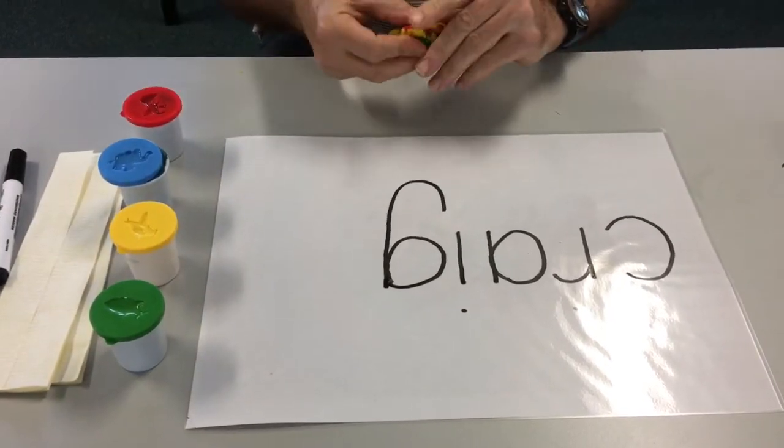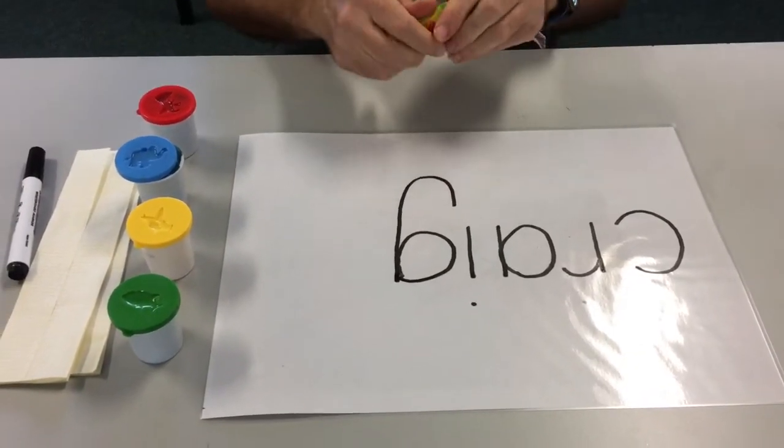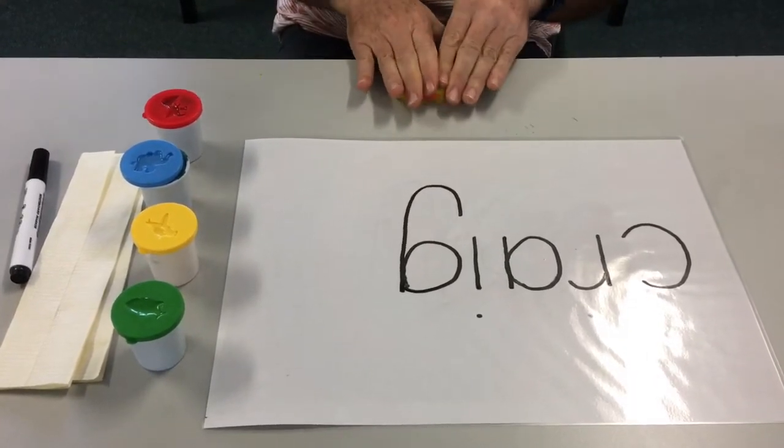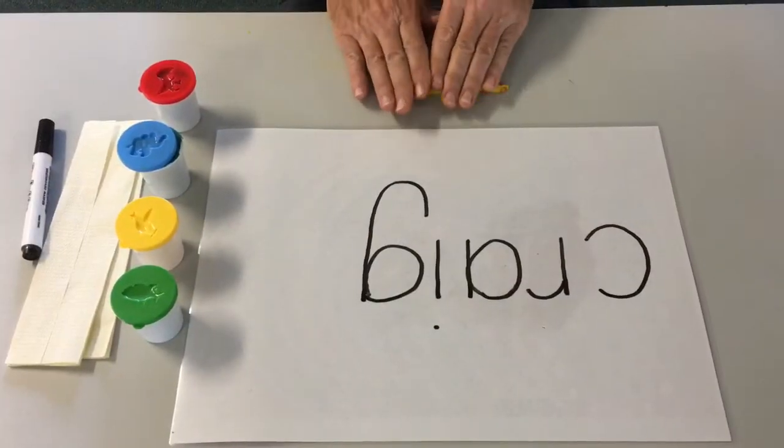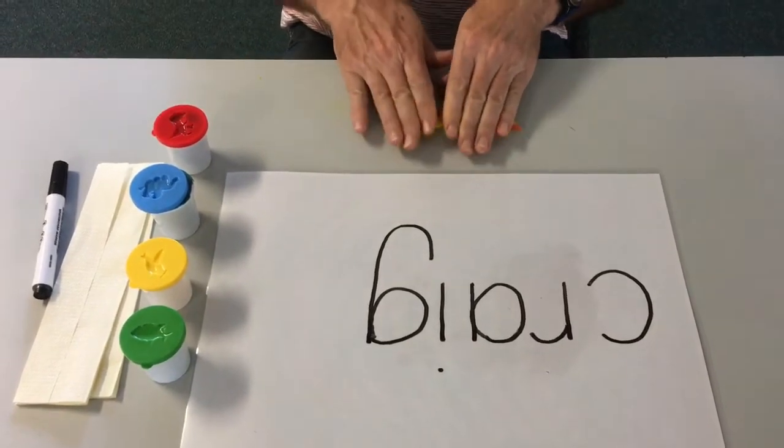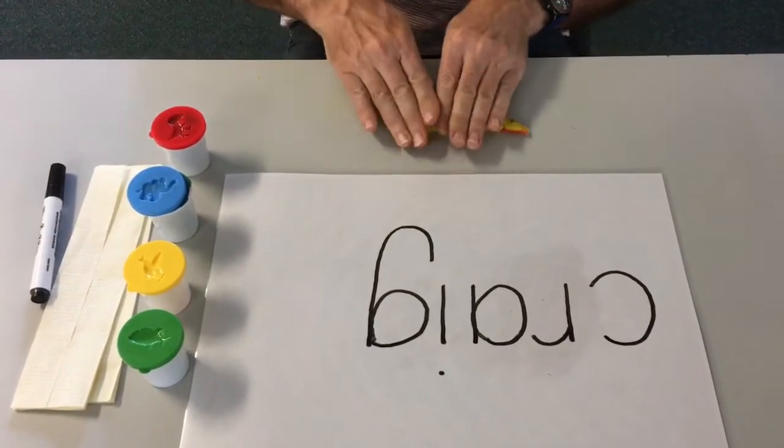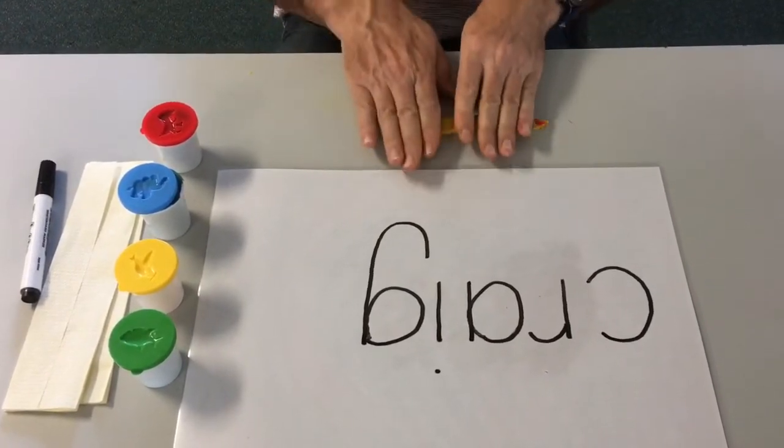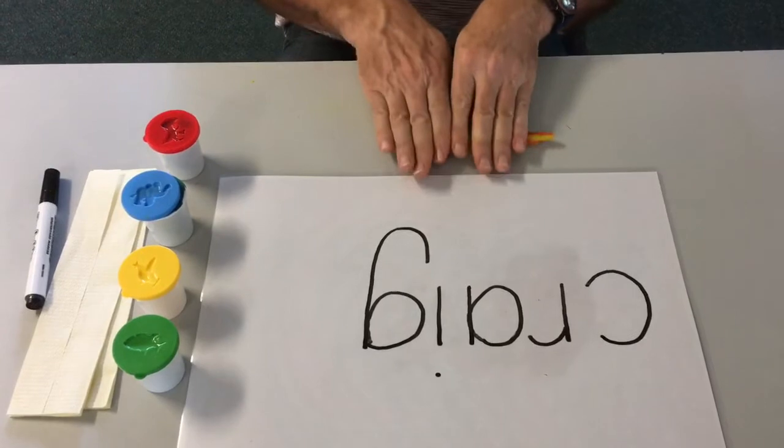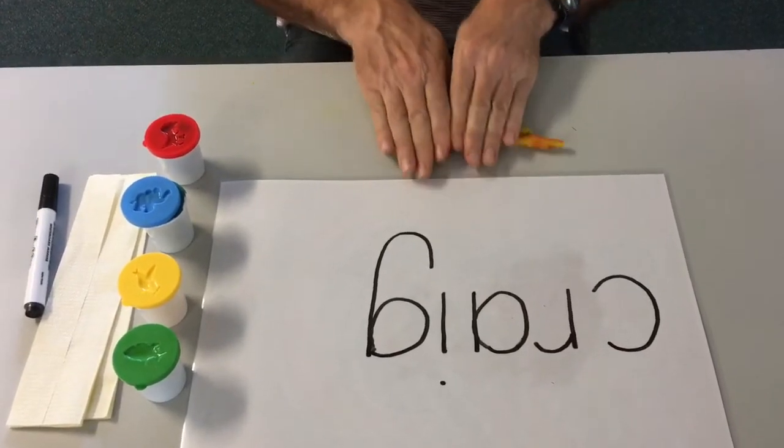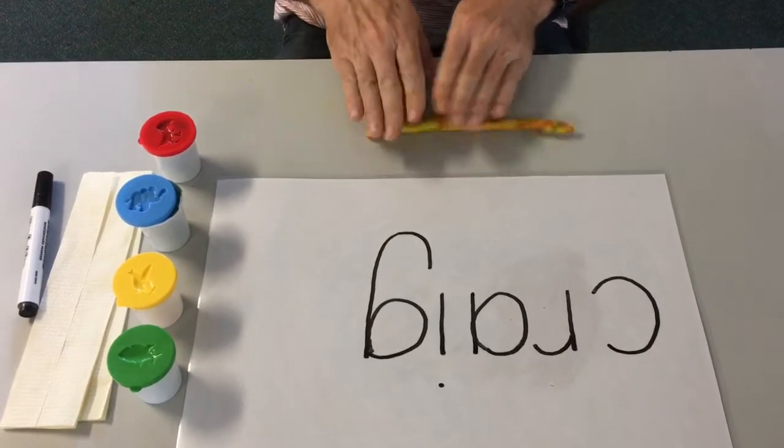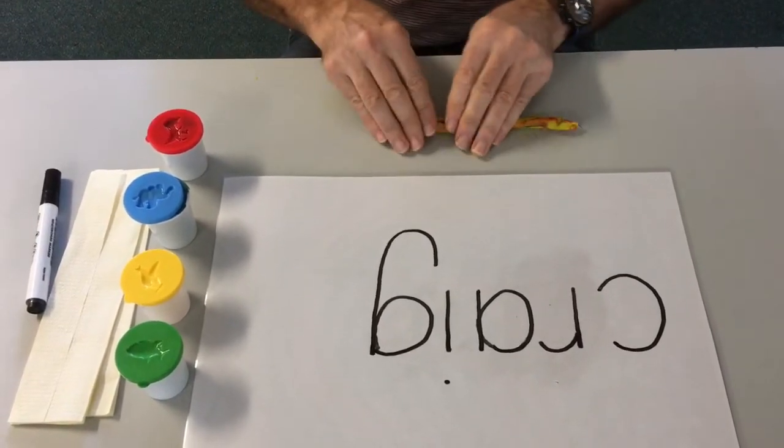Now first of all, we've got to roll our Play-Doh into a little log form. Okay, now I'm going to roll this Play-Doh out into thin rope-like forms. Rolling, rolling, rolling. And that should do it.